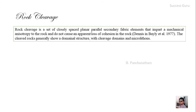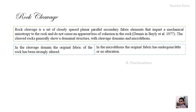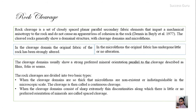A cleavage rock generally shows two domainal structures: the cleavage domain and the micro lithons. The cleavage domain is a domain in which the original fabric of the rock has been strongly altered, whereas in micro lithons the original fabric has undergone little or even no alteration. The portion strongly altered in fabric is the cleavage domain; the portion with little or no alteration is the micro lithon.